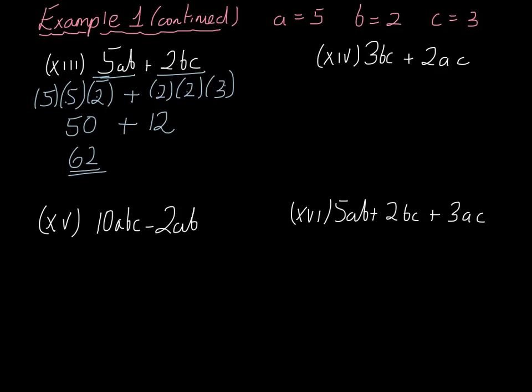3bc plus 2ac. 3bc is 3 in brackets, b is 2, and c is 3. We're going to add 2 in brackets, multiplied by 5, multiplied by 3. 3 times 2 is 6, times another 3 is equal to 18. 2 times 5 is 10, multiplied by 3 is 30. And 18 plus 30 is equal to 48.